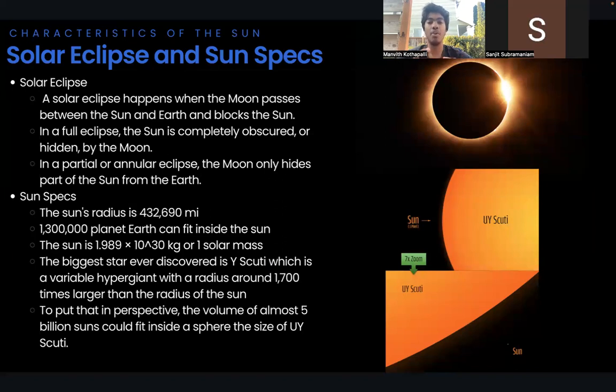The sun is 1.989 times 10 to the power of 30 kilograms or one solar mass, so it's really heavy. The biggest star ever discovered is Y Scotty, which is a variable hypergiant with a radius of 1,700 times larger than the radius of the sun.